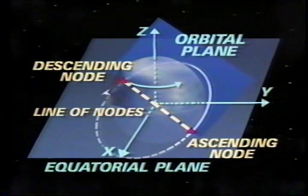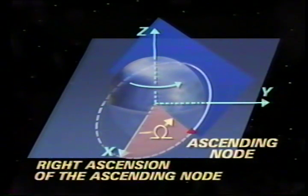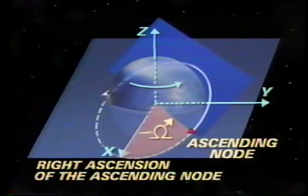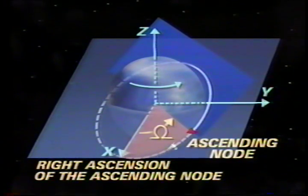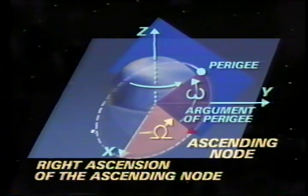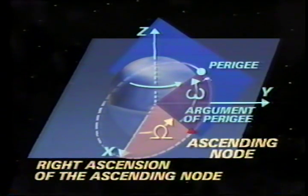The orientation of an orbit is determined by three orbital element angles. The right ascension of the ascending node is the angle between the X-axis and the ascending node, always measured eastward from the direction of the vernal equinox in the Earth's equatorial plane. The argument of perigee is the angle between the ascending node and the point of perigee, measured in the orbital plane in the direction of spacecraft motion.